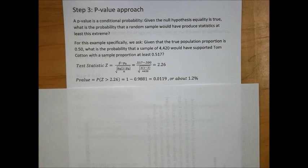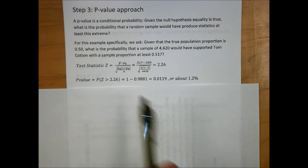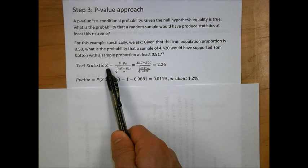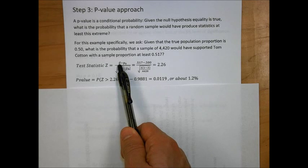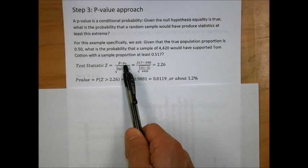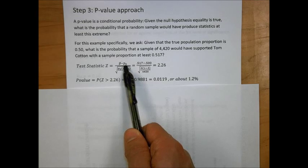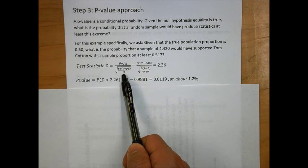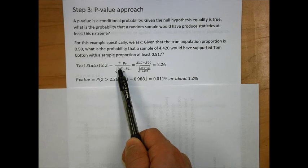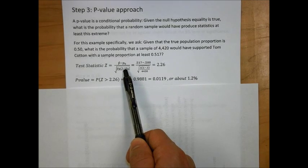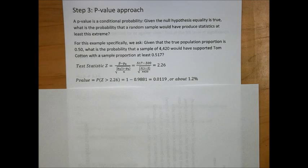To calculate a null hypothesis, we first calculate a test statistic. In this case, the test statistic is calculated as a standard normal z test statistic. We take the sample proportion p-hat, subtract the null hypothesis proportion, and that all happens in the numerator. Then we divide by the square root of the null hypothesis proportion, times 1 minus the null hypothesis proportion, divided by the sample size.